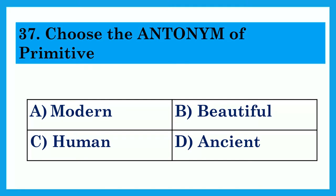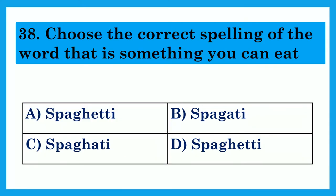Choose the antonym of 'primitive'. Option A: Modern. Option B: Beautiful. Option C: Human. Option D: Ancient. The answer is Option A: Modern. Choose the correct spelling of the word that is something you can eat. The answer is Option A: Spaghetti — S-P-A-G-H-E-T-T-I is the right spelling for spaghetti.